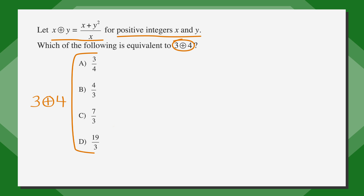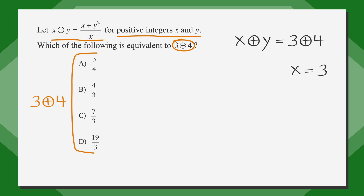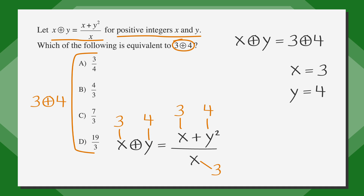This problem is stating that when you see x circle-cross y, perform the equation (x plus y) squared, all divided by x. We can see here that it's just like picking numbers, except we're told which numbers to pick. So we want to pick 3 for x and 4 for y. Putting 3 in for x and 4 in for y in the equation, we get 3 circle-cross 4 equals (3 plus 4) squared, all over 3.